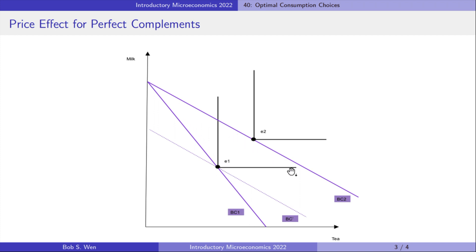The new optimal consumption bundle is E2. The movement from E1 to E2 is the total price effect.